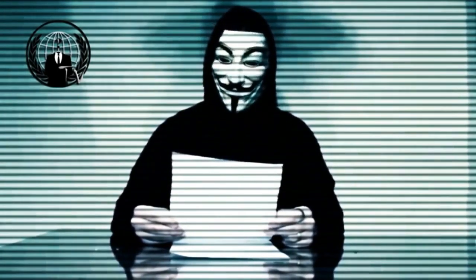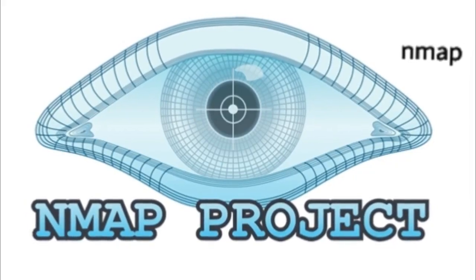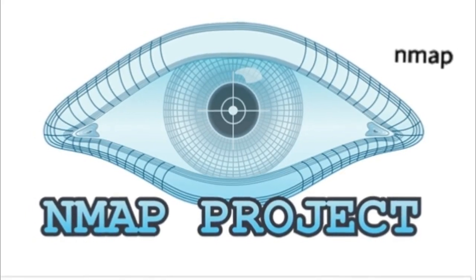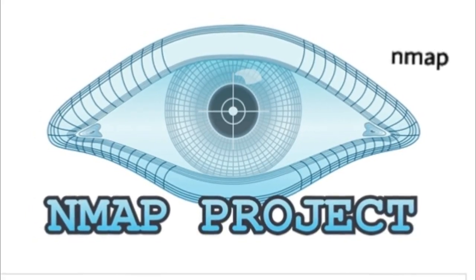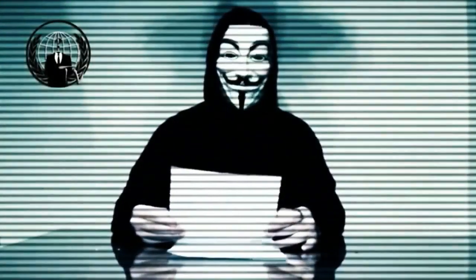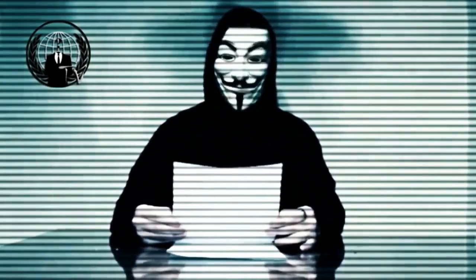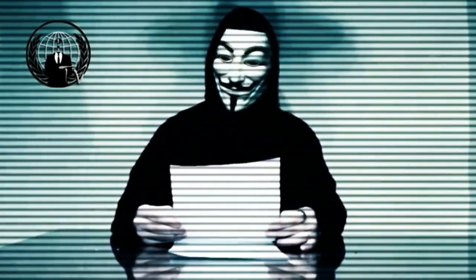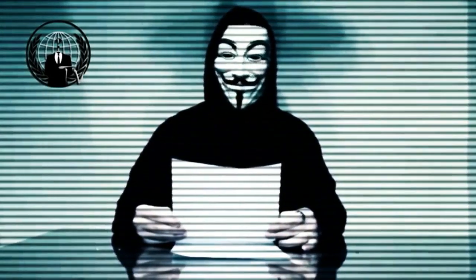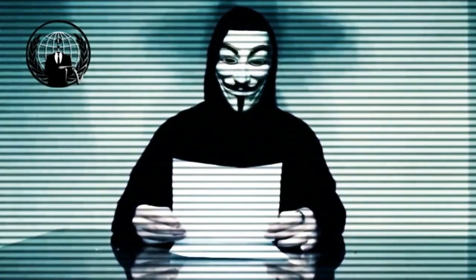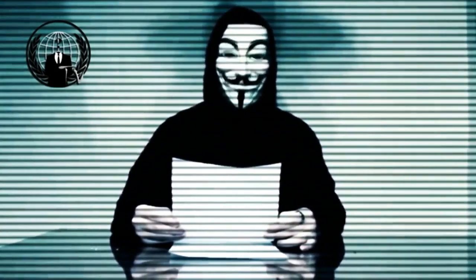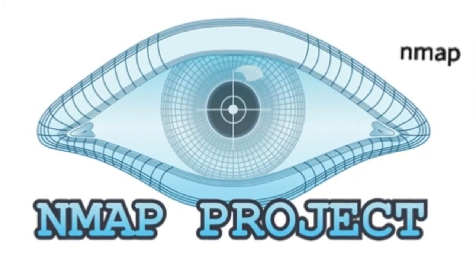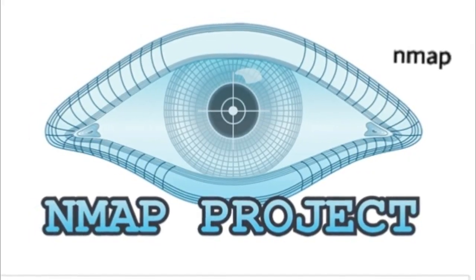Nmap uses raw IP packets in creative ways to determine what hosts are available on the network, what services — application name and version — those hosts are providing, what operating systems and fingerprinting, and what type and version of packet filters or firewalls are being used by the target.